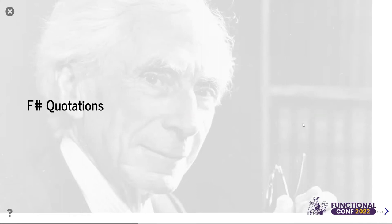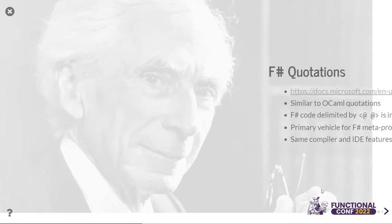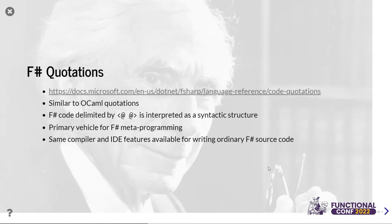Let's talk about F# quotations, a very important feature of F#, similar to OCaml quotations. You put code within special delimiters and the compiler interprets it as a syntactic structure in addition to the expression itself — a structure you can manipulate and inspect. Quotations are the primary vehicle for metaprogramming in F#, letting you use syntax structures for custom purposes like writing a DSL. The same compiler and IDE features — type checking, syntax checking, syntax highlighting — are all available for quotations.